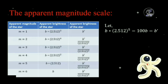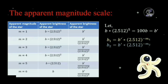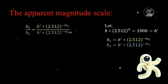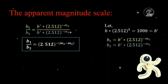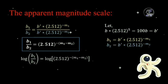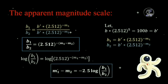Now we can establish the relation between the brightness of two stars in terms of their apparent magnitudes. Let the brightness of a magnitude M1 star be B1 and the brightness of a magnitude M2 star be B2. Taking the ratio B1/B2, we have B1 = B' × 2.512^(−M1) and B2 = B' × 2.512^(−M2). Hence, B1/B2 = 2.512^(−(M1−M2)). Taking the log, we get M1 − M2 = −2.5 log(B1/B2). So if we know the brightness of two stars, we can calculate the difference of their apparent magnitudes.